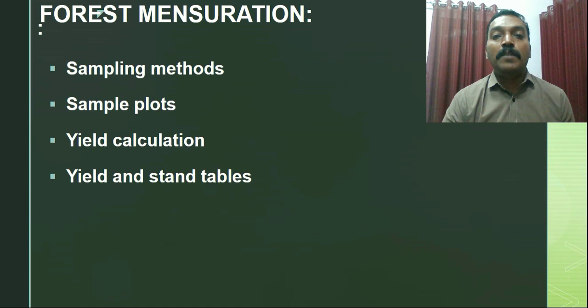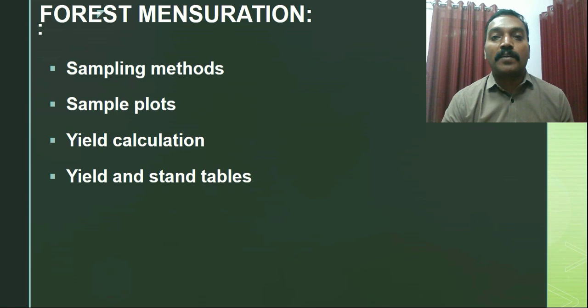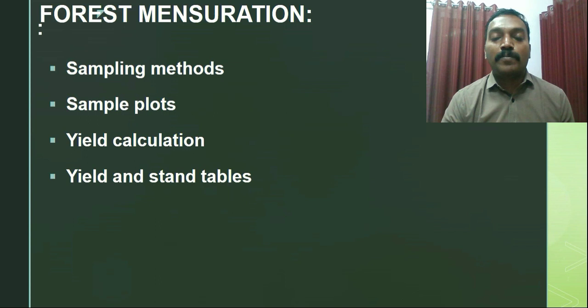Another important aspect following sampling methods is sample plots. Sample plots are small representative areas in which actual enumeration or estimation is carried out. Since forest areas are very large, sample plots — generally circular or rectangular in shape — are used as representative areas for estimation. We will study in detail what a sample plot is, what size it should be, how to lay out a sample plot, and how to carry out enumeration and estimation inside it.